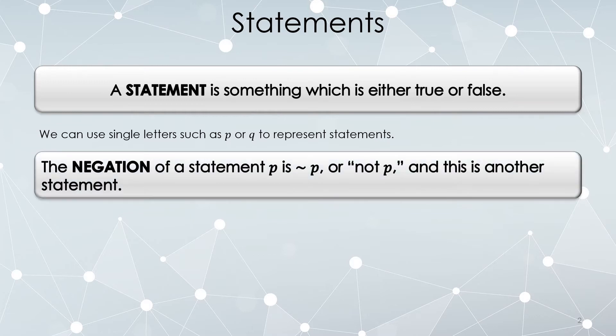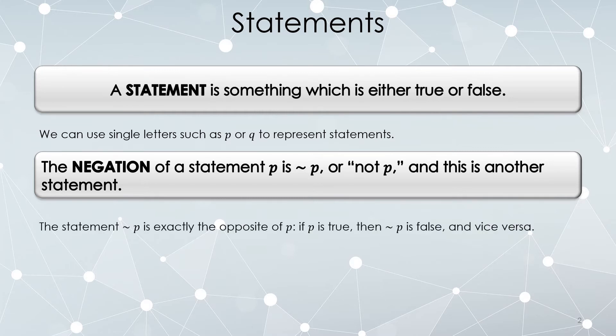The first thing we learn how to do with statements is discuss its negation. So if you have a statement P, the negation of that statement is to put a little tilde in front of it and pronounce it as 'not P' or 'the negation of P.' This is itself a new statement created out of the original. The statement not P is exactly the opposite of P.